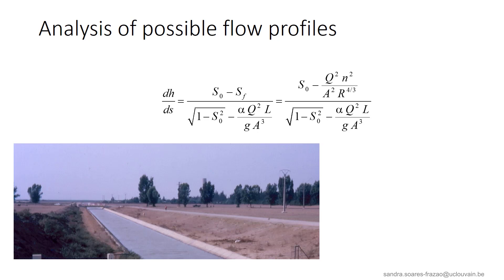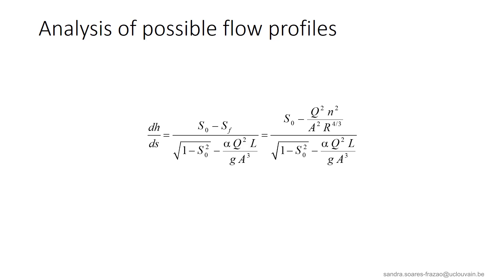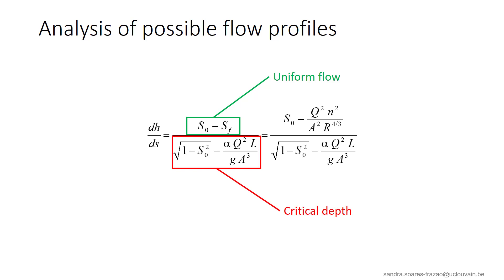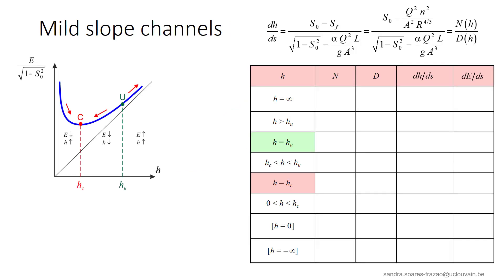Let us consider prismatic channels only for the moment. This equation appears as a simple ODE and could be solved easily by finite differences. However, we will see that if we analyze the evolution of the depth according to this equation, the possible solutions for the water depth can be classified in a series of typical profiles corresponding to specific flow conditions. It is interesting to notice that the numerator is actually the definition of the uniform flow when S0 equals Sf, and the denominator corresponds to the definition of the critical depth when it equals 0. The analysis of the dh/ds function might appear theoretical, but it will provide some interesting physical results.